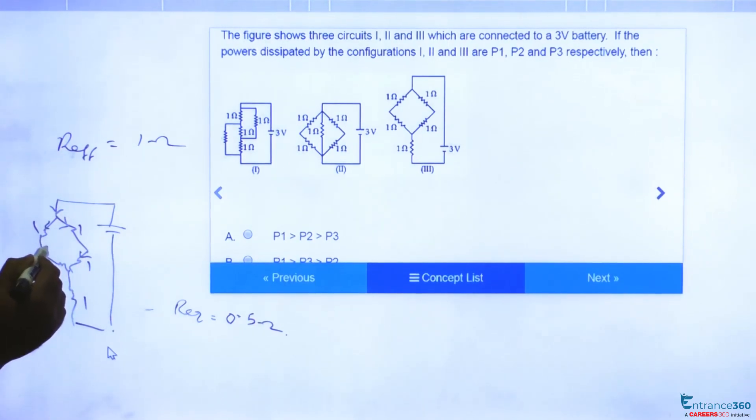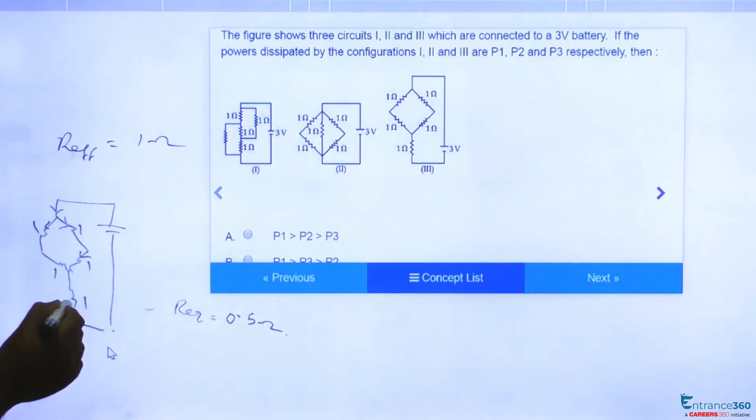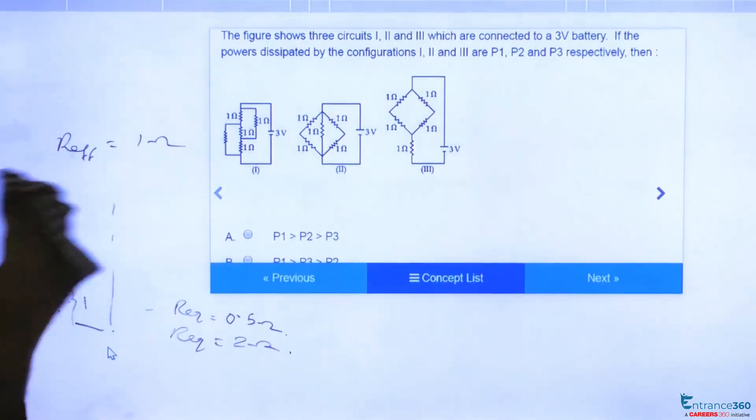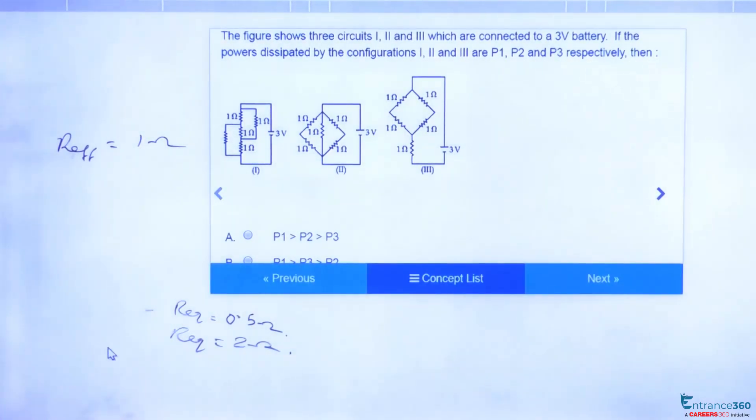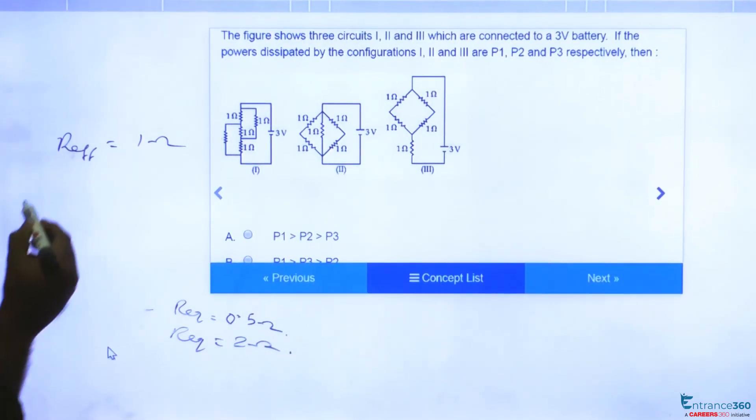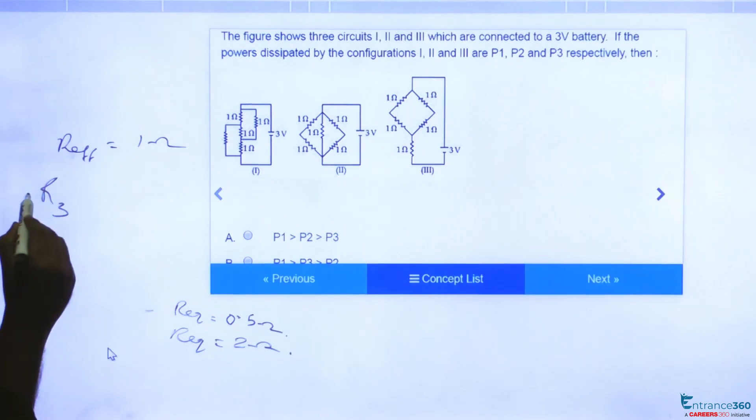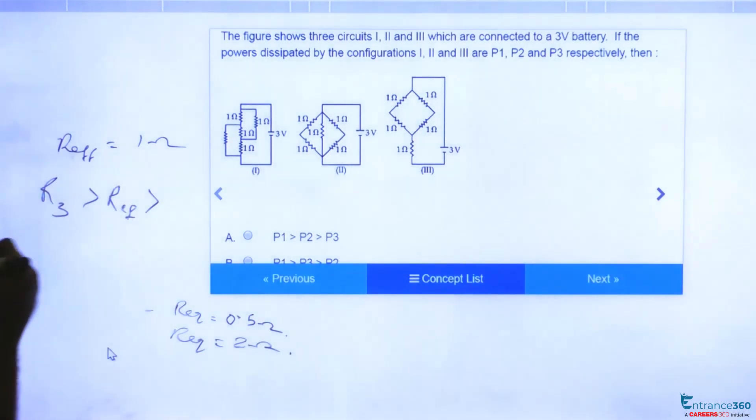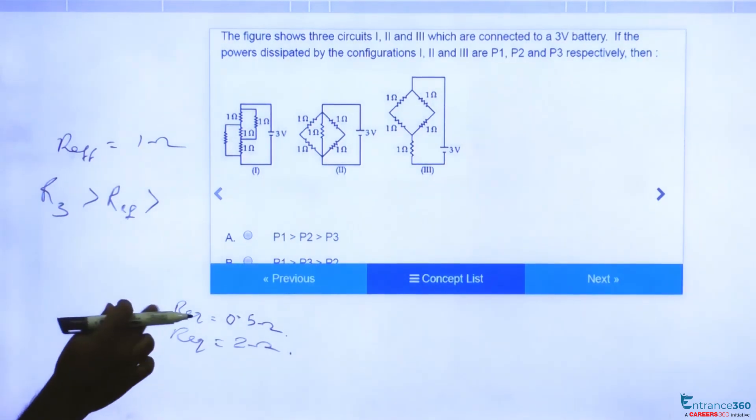So 2 ohm is parallel to 2 ohm, so effective will be one ohm. And this is series to combination of this. One ohm and one ohm are in series, so net will be 2 ohm. So let's see, the resistance of third circuit is greater than first circuit, which is greater than second circuit.